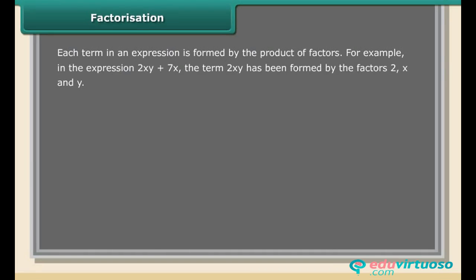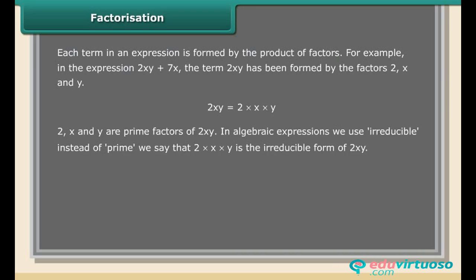Factorization: each term in an expression is formed by the product of factors. For example, in the expression 2xy + 7x, the term 2xy has been formed by the factors 2, x, and y — that is, 2xy = 2 × x × y. In algebraic expressions we use 'irreducible' instead of 'prime'. We say that 2 × x × y is the irreducible form of 2xy.